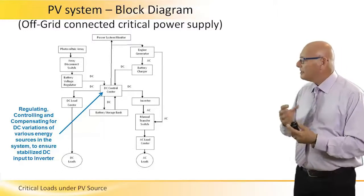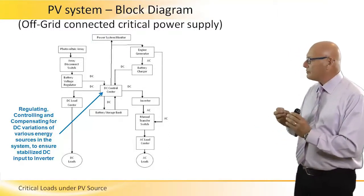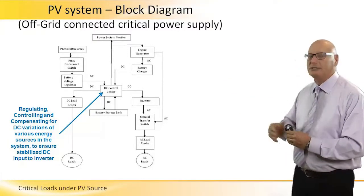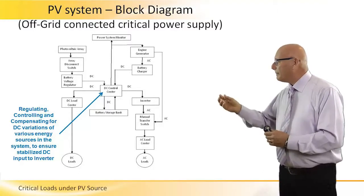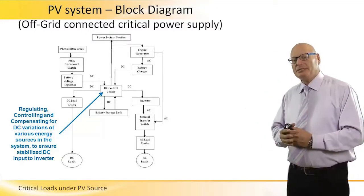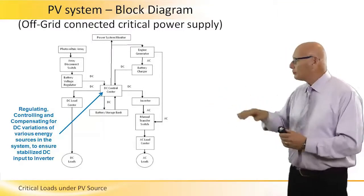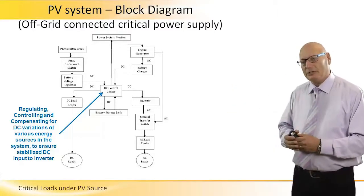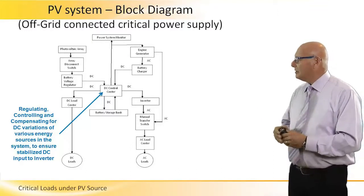This blob diagram is basically showing us the same as we've been talking about before, but I would like to put an emphasis on something very interesting here — regarding the engine generator on the top right side of the picture. In the center, there is a DC control center. This DC control center controls the DC load on the bottom left, and controls what will be inverted and goes to the AC load on the bottom right corner.